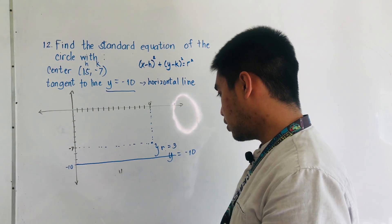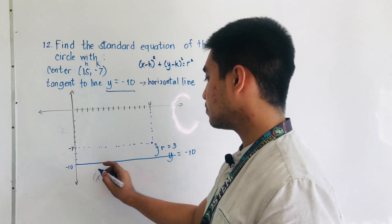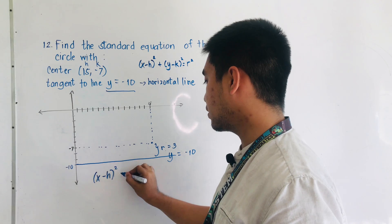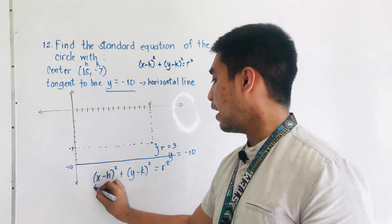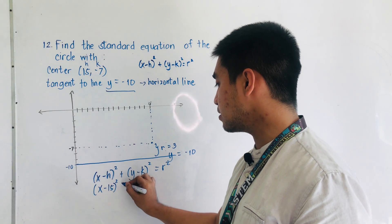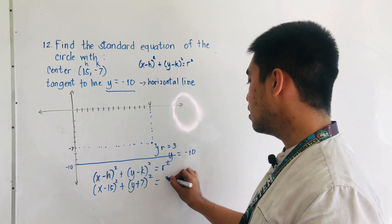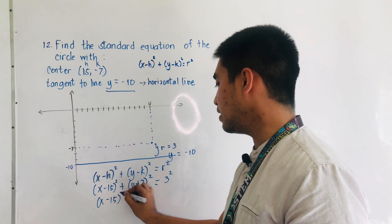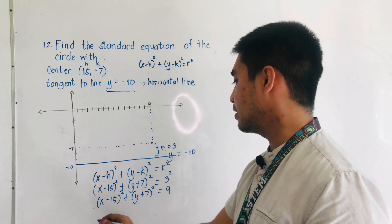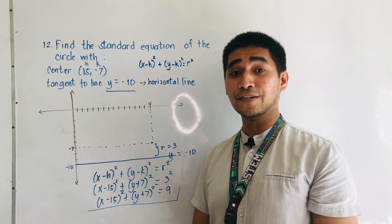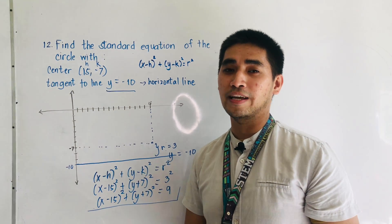Based on the equation, we now have: x minus h quantity squared plus y minus k quantity squared is equal to r squared. Substituting, that is x minus 15 quantity squared plus y minus negative 7 — which becomes y plus 7 — quantity squared, is equal to 3 squared. So x minus 15 quantity squared plus y plus 7 quantity squared is equal to 9. This is the equation of the circle with center at (15, -7) and tangent to the line y = -10.